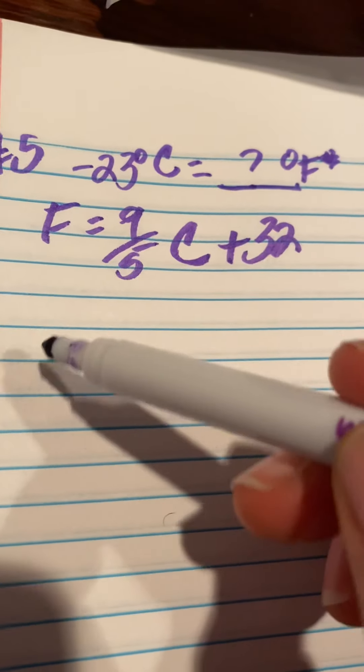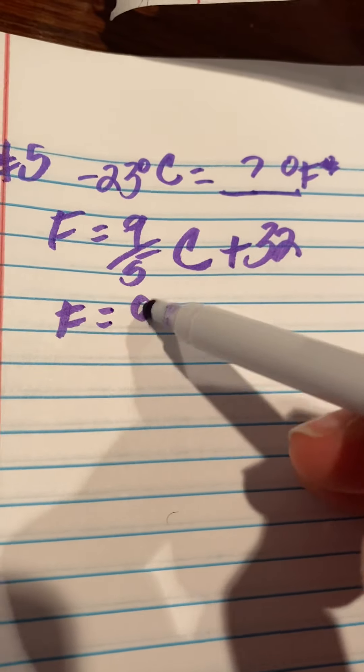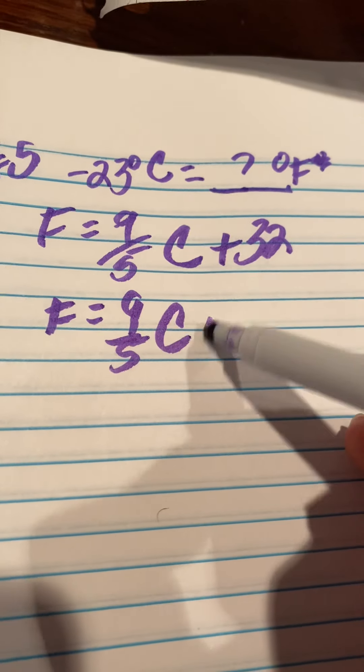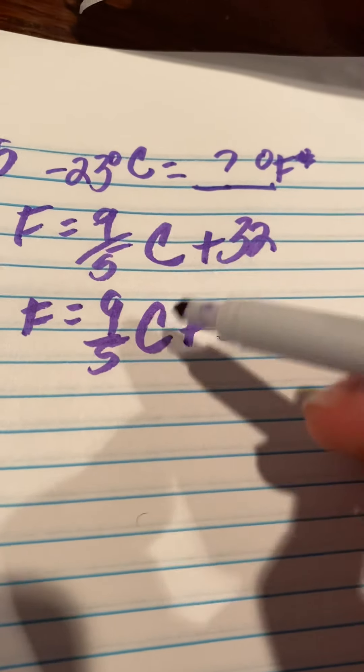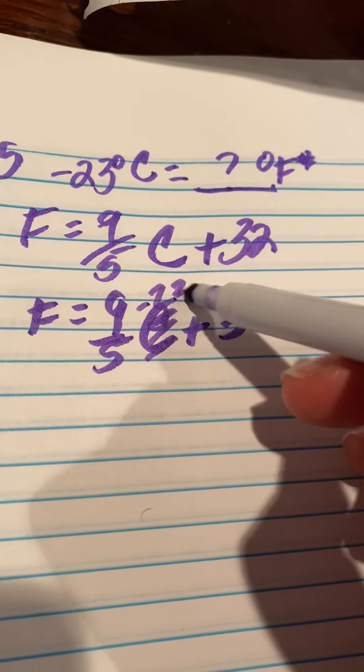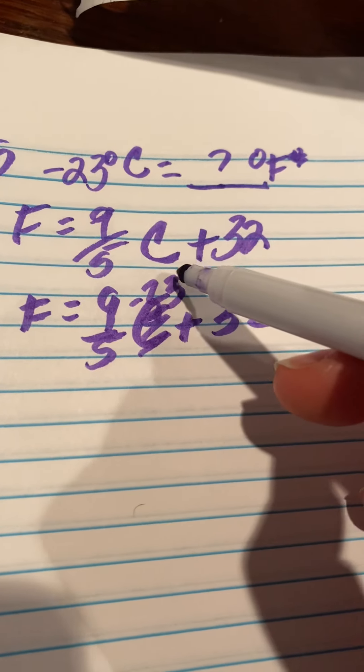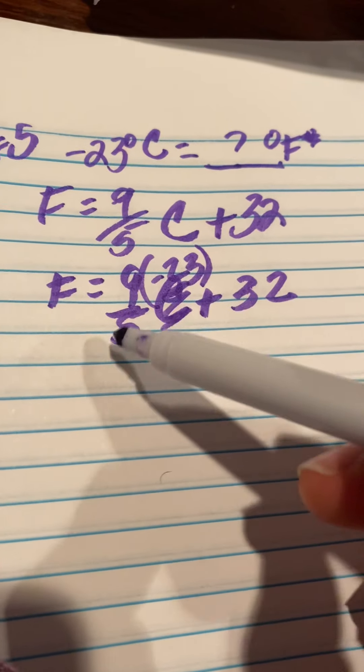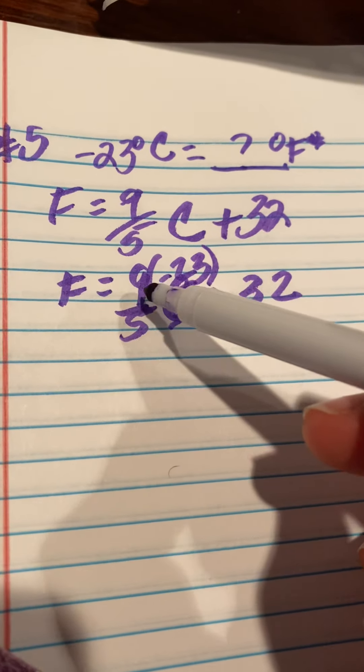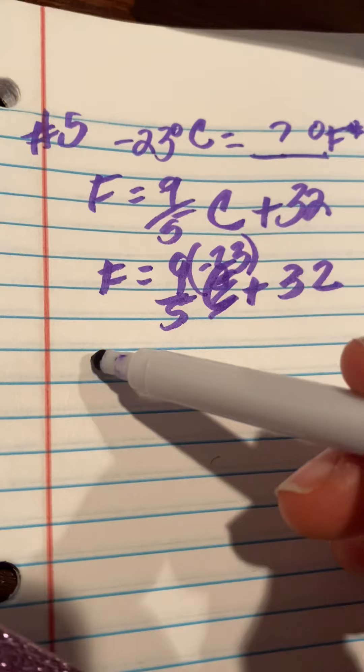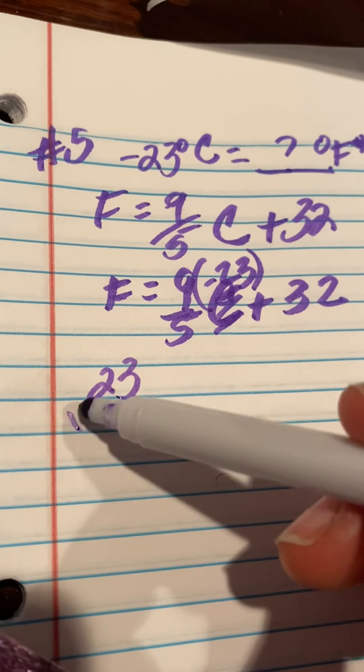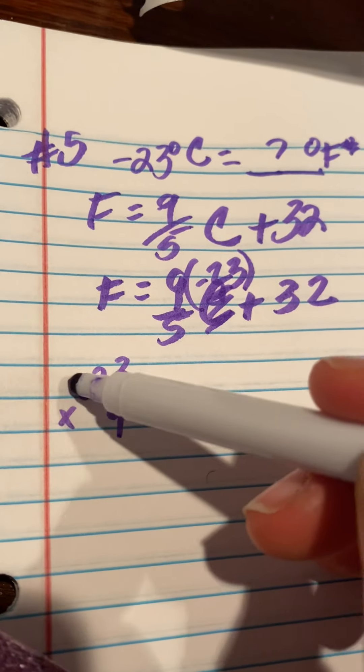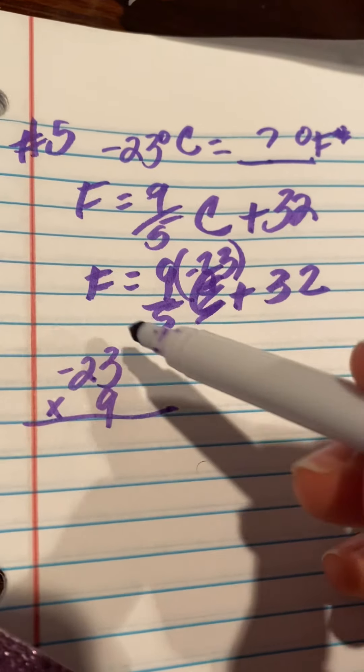And then we'll just plug in our numbers. So F is equal to 9 fifths times negative 23 plus 32. And I'm going to put this in parentheses because parentheses means multiply. So now we just have to do a little bit of work here. Nine times negative 23. Just like any other multiplication, we just got to make sure we add the negative at the end since one of our numbers is negative.